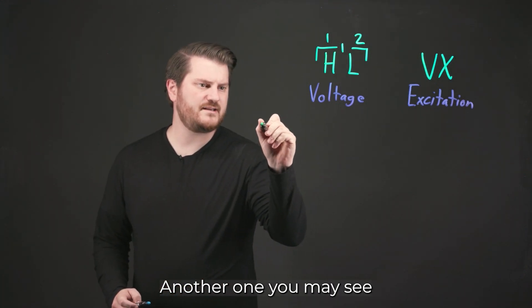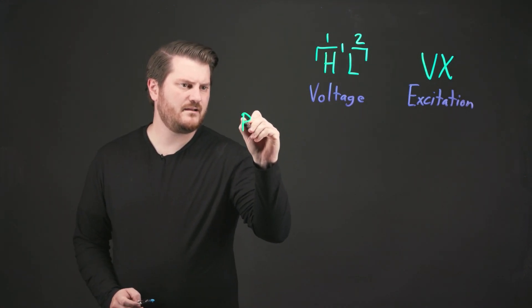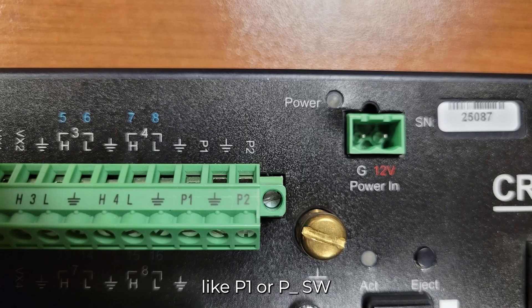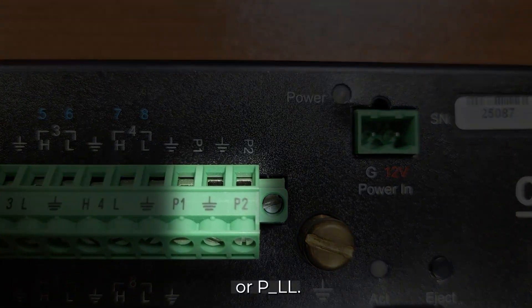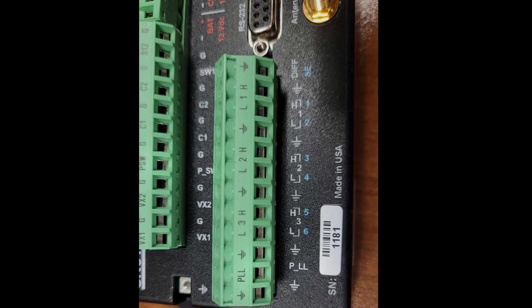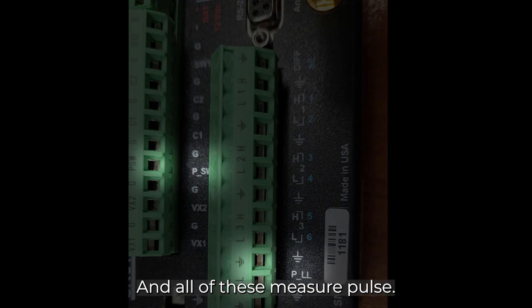Another one you may see is something like P1 or P underscore SW or P underscore LL, and all of these measure pulse.